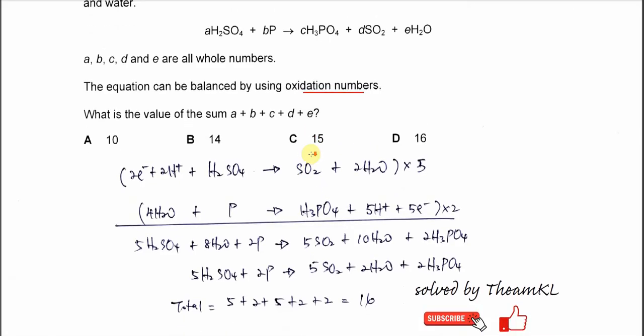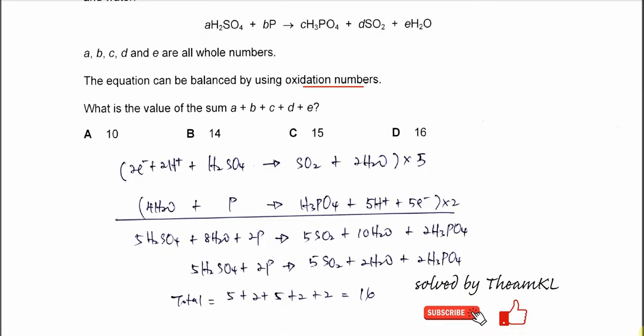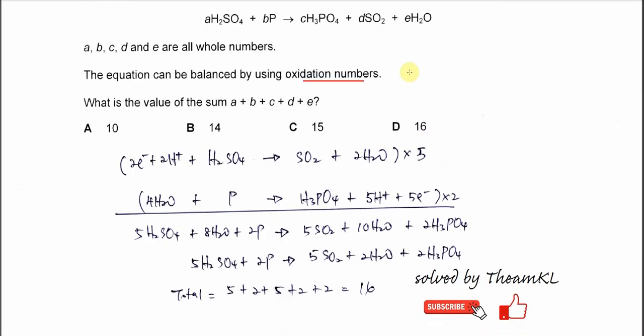The better way to do this is to form the two half equations. Let's start with H2SO4 and SO2. You cannot choose H3PO4 because this is not the sulfur product. When we choose H2SO4, the sulfur-related product is SO2.